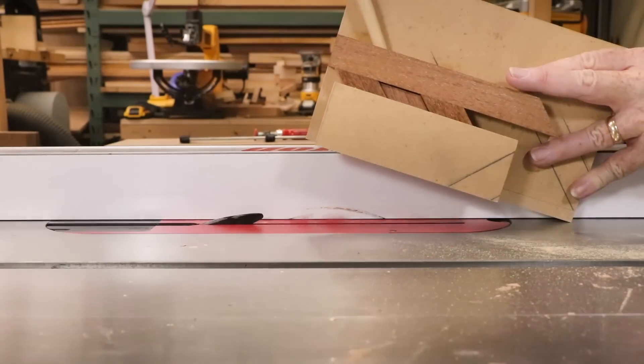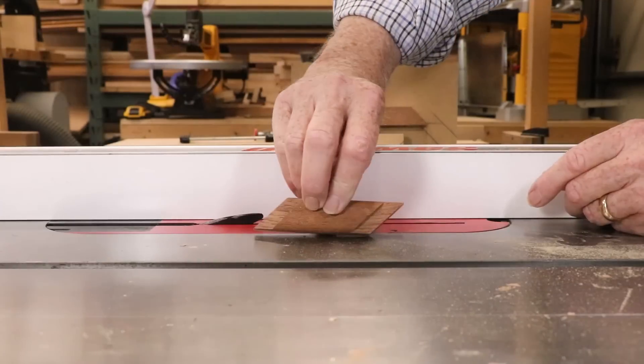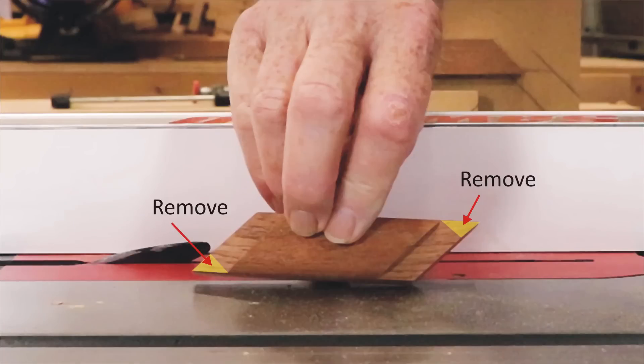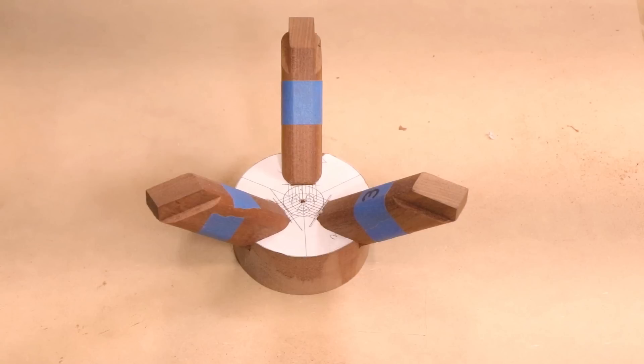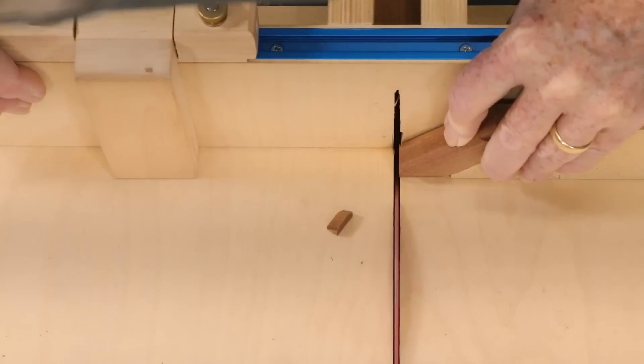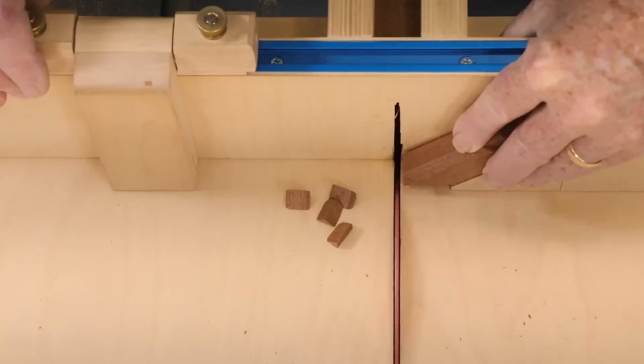The pointy end of each tenon has to be amputated. At the hub, those pointy ends will overlap with each other near the center. On the wheel, the pointy ends would extend all the way to the outer perimeter where they would be visible and annoyingly palpable.